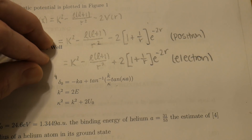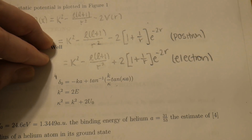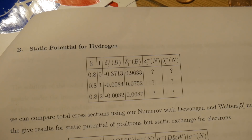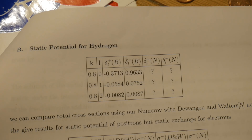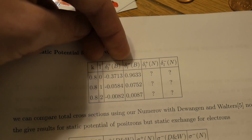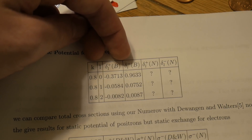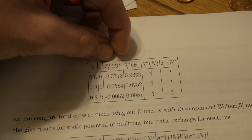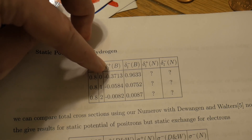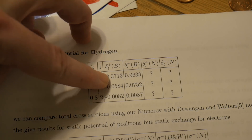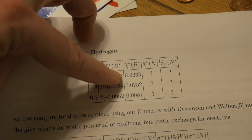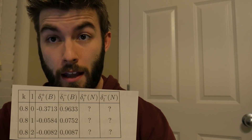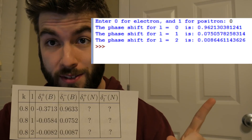After doing this I was supposed to calculate the phase shift of the wave function. All of these values are well understood, well established. The delta plus and the delta minus correspond to the phase shift for a positron and an electron for the static potential for a given angular momentum quantum number. These are the values I was supposed to get, and these are the values that I get.